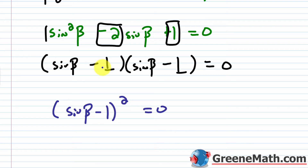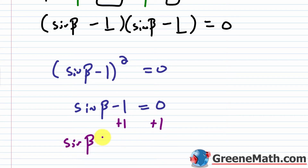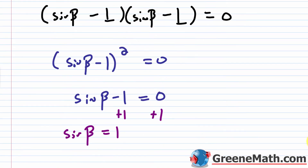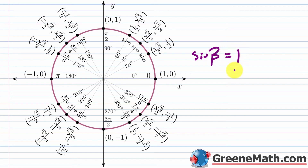Setting sine of beta minus 1 equal to 0 and adding 1 to both sides gives sine of beta equals 1. The sine equals 1 only where the y-coordinate is 1 on the unit circle, which is at 90 degrees or pi over 2 in radians. That is the only location.